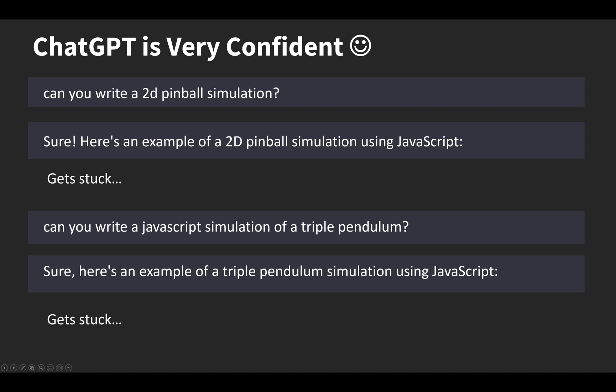Then I went to later demos. I asked it whether it can write a pinball simulation. ChatGPT is always confident. Sure. Here's an example of a 2D pinball simulation using JavaScript. Then it starts spitting out some code defining flippers and gets stuck. Can it write a simulation of a triple pendulum? Sure. Here's an example of a triple pendulum simulation using JavaScript. Again, ChatGPT is very confident and then gets stuck after 50 lines of code.